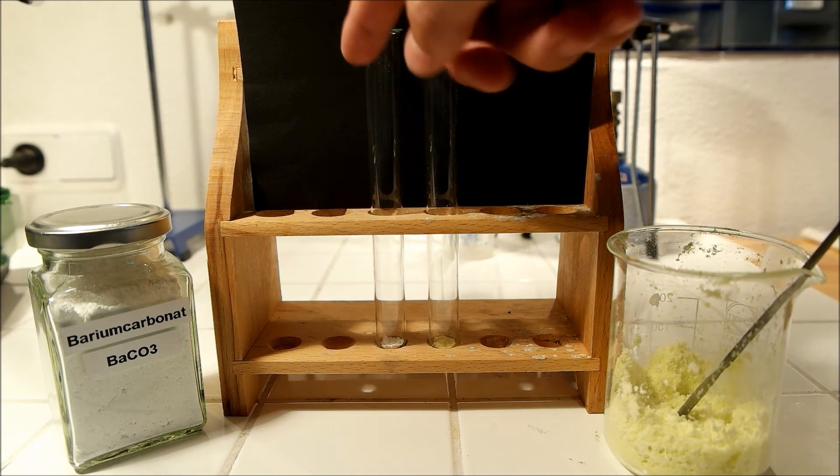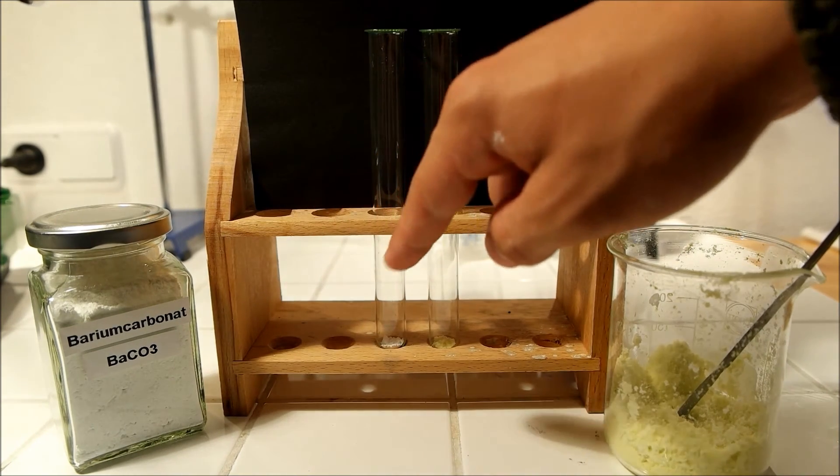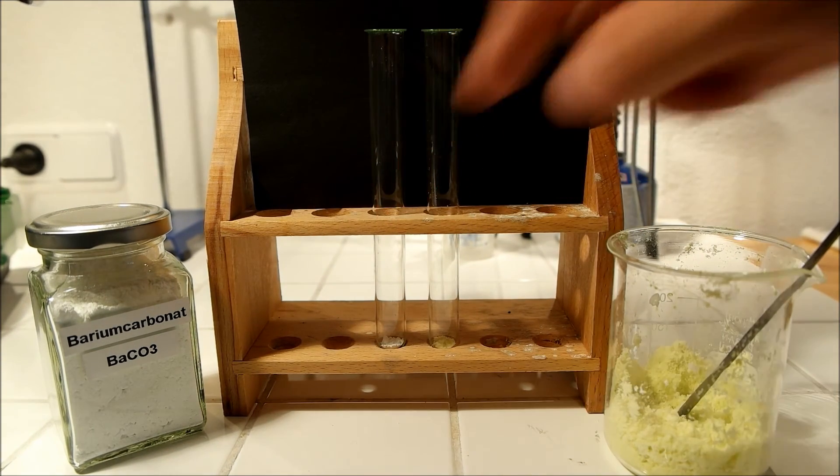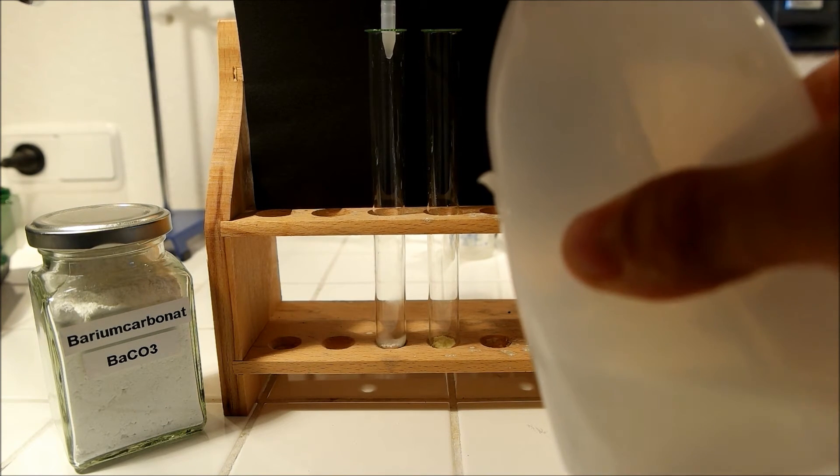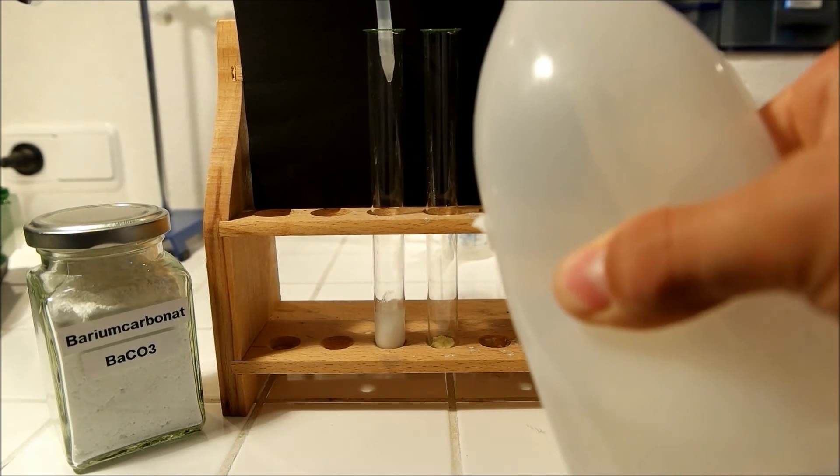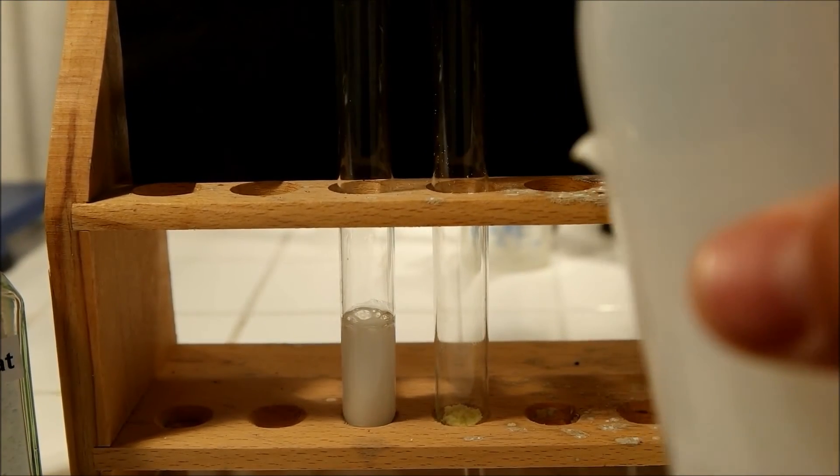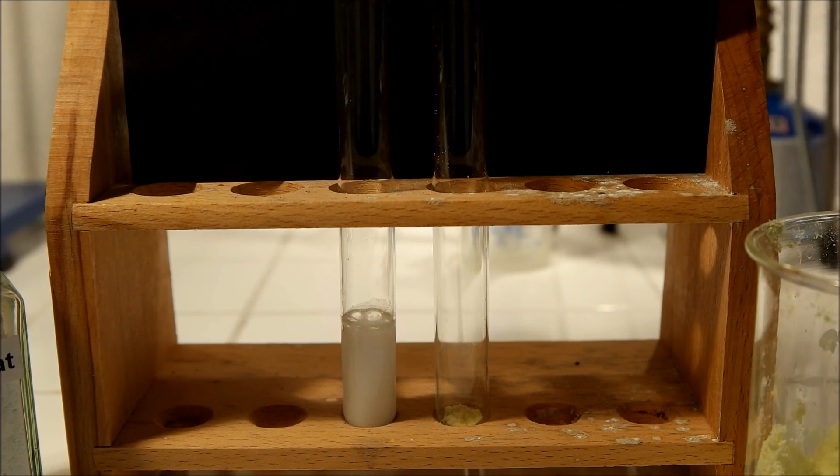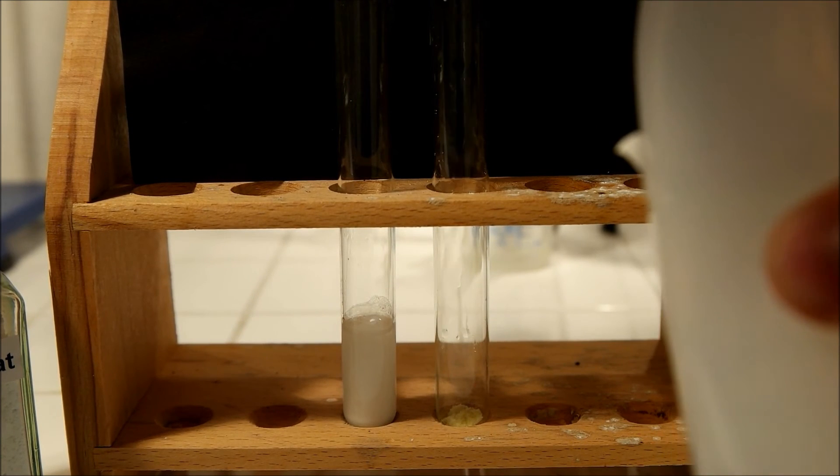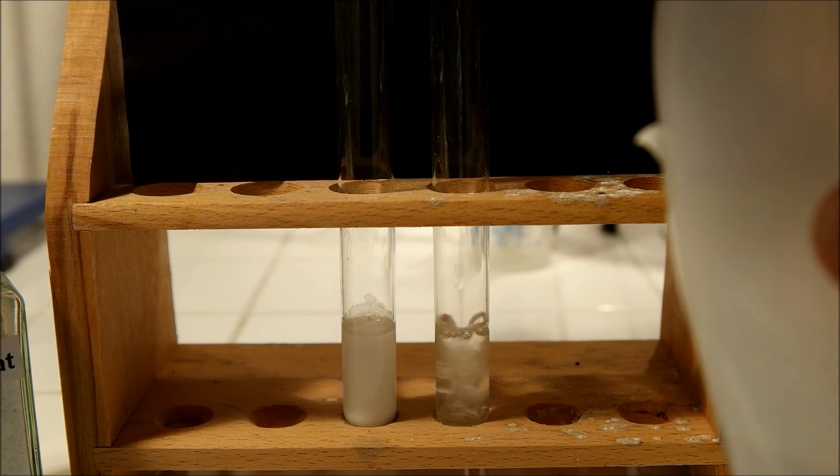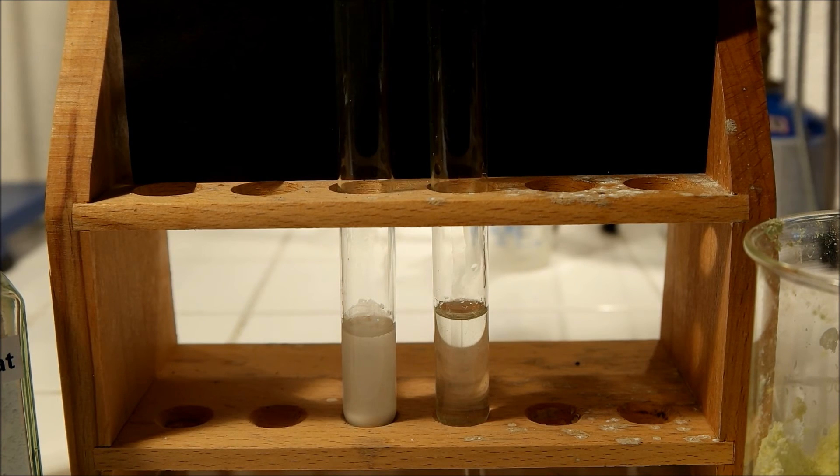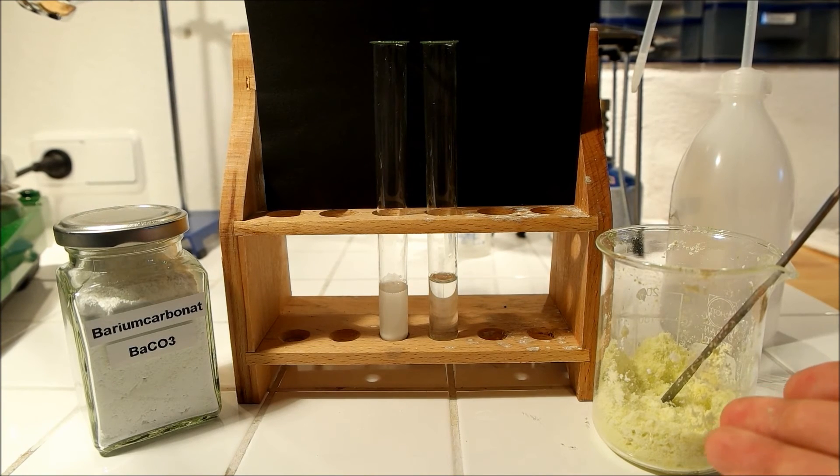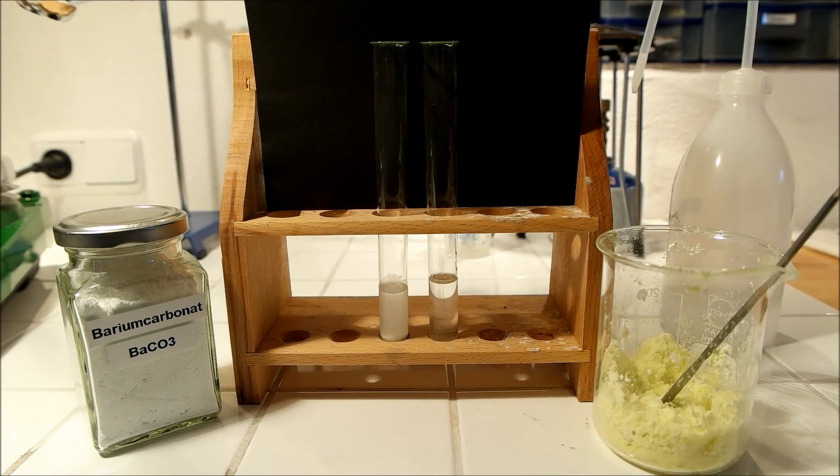In this test tube there's a small amount of barium carbonate. In here there's the same amount of barium chloride. Now let's see what happens if we add some water. Here you can see that the barium carbonate hardly dissolves, but the barium chloride dissolves very well. You can see that the whole thing is a very different salt. This has nearly nothing to do with our barium carbonate.